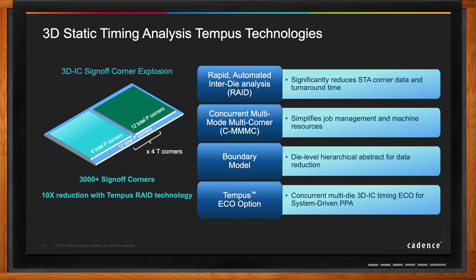As part of our Tempest timing analysis technology, we developed a solution with multiple parts. One is die-level hierarchical abstraction to reduce the amount of data by creating boundary models. We also make use of concurrent multi-mode, multi-corner capability to simplify job management and machine resources and fan it out on multiple CPUs. The most important new development is rapid automated inter-die analysis, which significantly reduces the corner data through smart reduction — looking at all the data to figure out the key optimal set. It can bring down the runtime for handling such a large amount of corners by almost 10x.